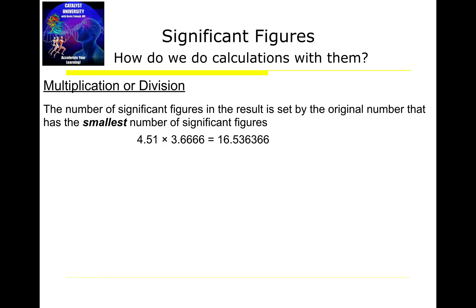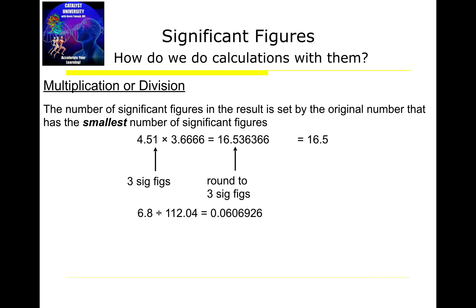When dealing with multiplication and division, it's a bit different. You look at whichever number has the smallest total number of significant figures — it has nothing to do with decimal places. For example, 4.51 times 3.6666: 4.51 has three significant digits and 3.6666 has five. So your final answer can only have three significant digits — the smaller one. The calculator result is rounded to 16.5.